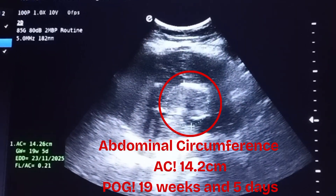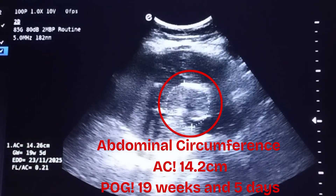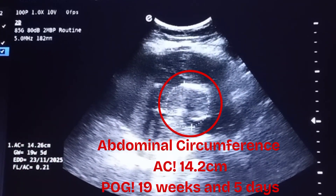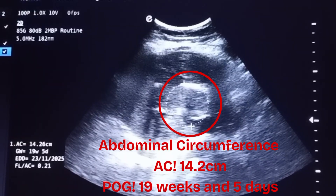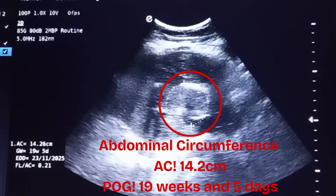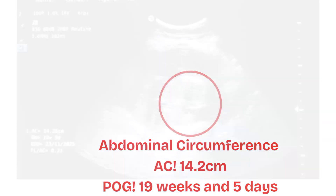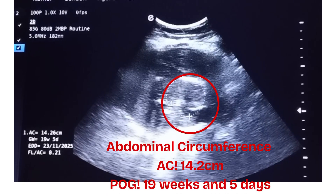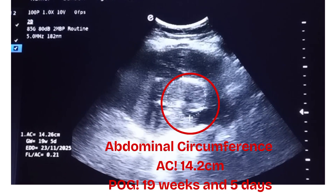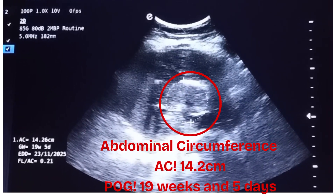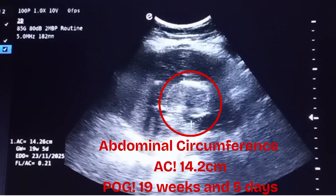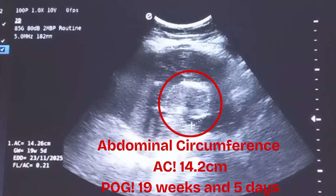Inside the red circle, the fetal abdomen can be seen. When fetal abdominal circumference is taken, it measures 14.9 cm, showing 19 weeks and 4 days period of gestation. All three measurements show different periods of gestation because of the macerated fetus and its parts.